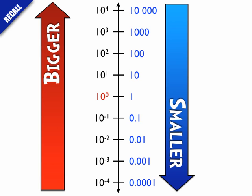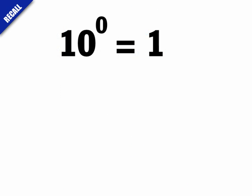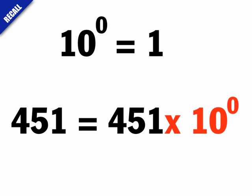As the negative exponents get larger in value, the actual number is getting smaller — it's the opposite of what we usually think about. Also, 10 to the 0 is the same as 1. So if I have 451, that's the same as 451 times 10 to the 0. There's no need to write 10 to the 0, so we leave it as 451, but it is there.